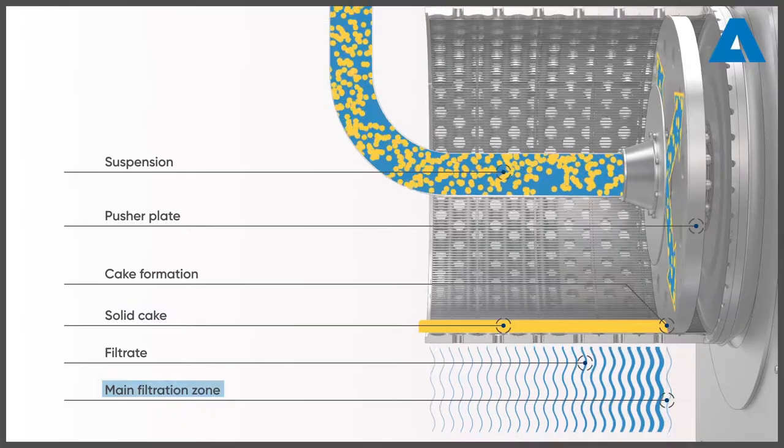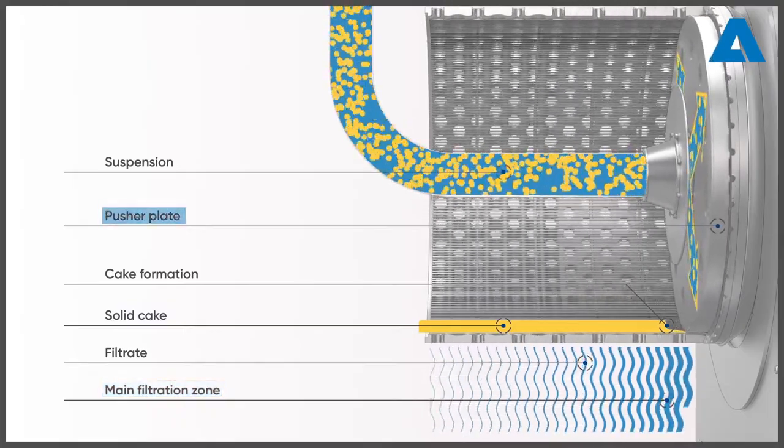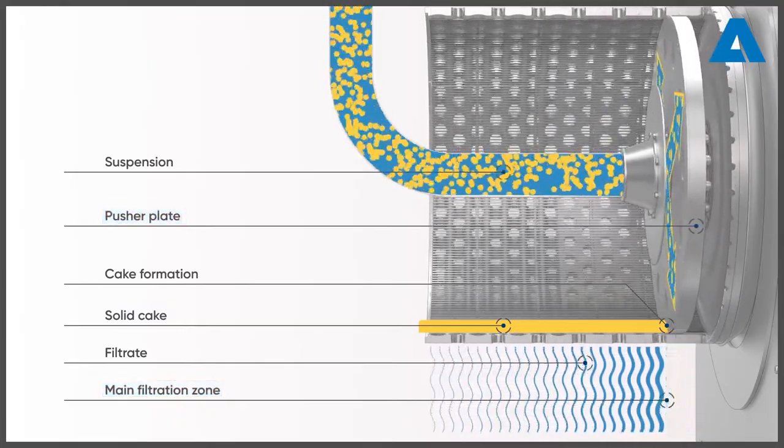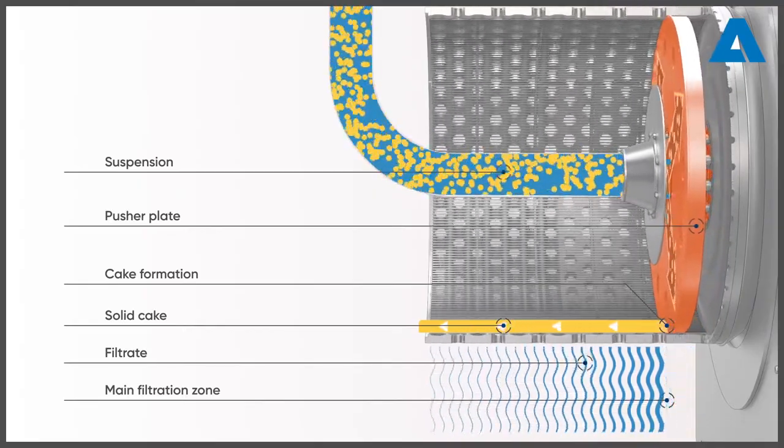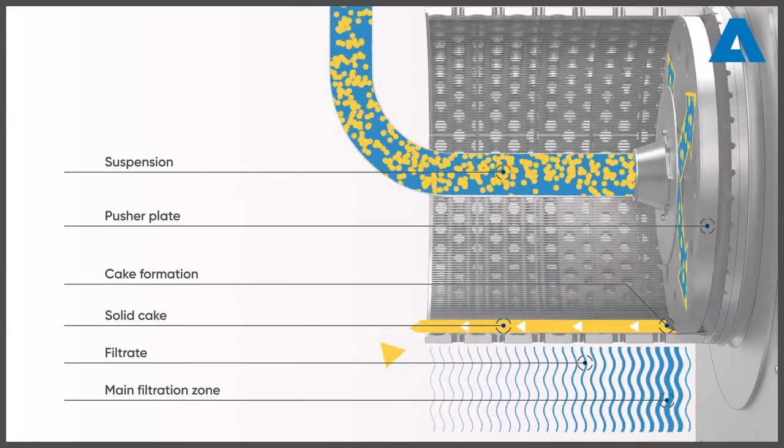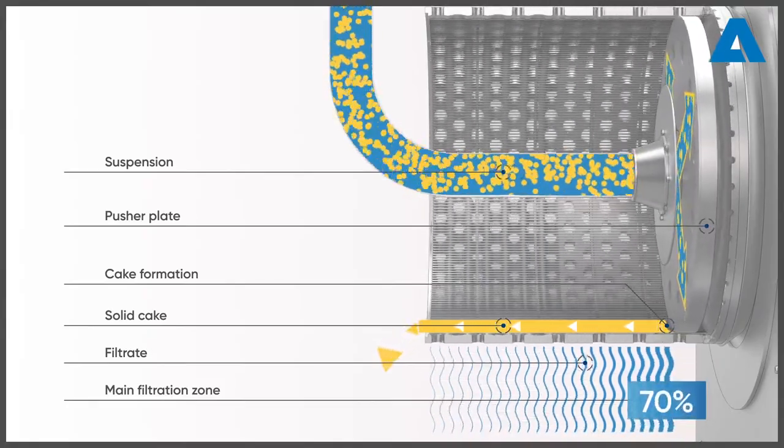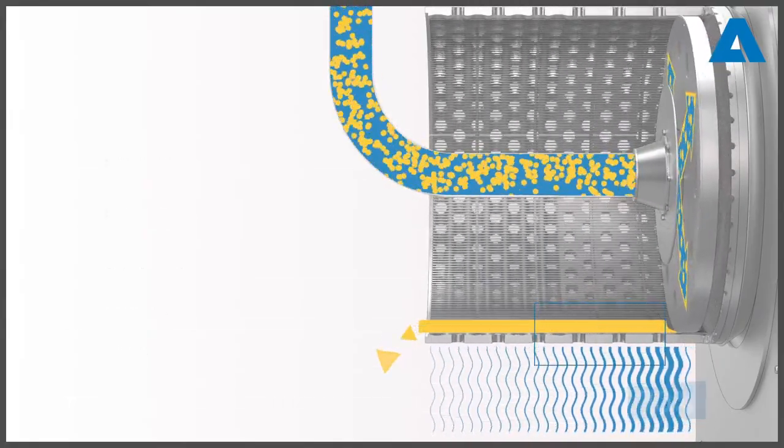The solid cake is formed in the main filtration zone which is located in front of the pusher plate. The filtrate leaves the machine and the solid cake is left behind. The cake is then pushed together by the pusher plate and thus moved forward at the same time. The main filtration zone which is responsible for over 70% of the filtration effect is of particular interest.